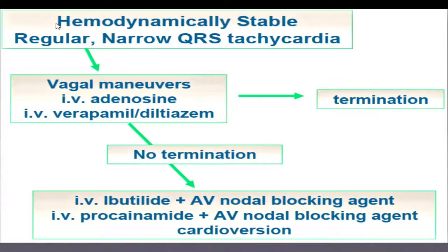There's an established algorithm for managing these patients. They come in hemodynamically stable, usually with a regular narrow complex QRS. The taught interventions are vagal maneuvers, carotid sinus massage, and IV adenosine — sometimes that works. When it doesn't, other measures can be taken, but the definitive treatment for all these tachycardias is to take patients into the electrophysiology lab, find the source of the abnormal electrical conduction, and ablate it.